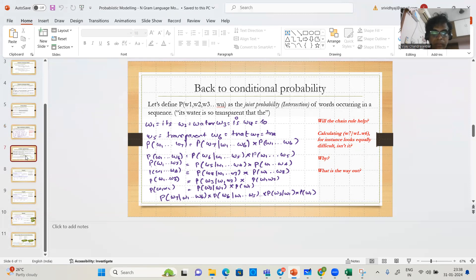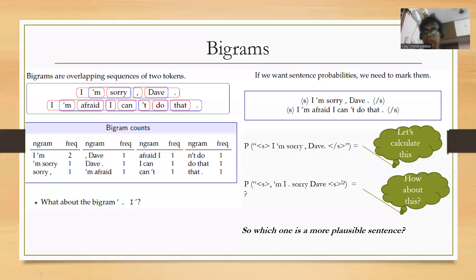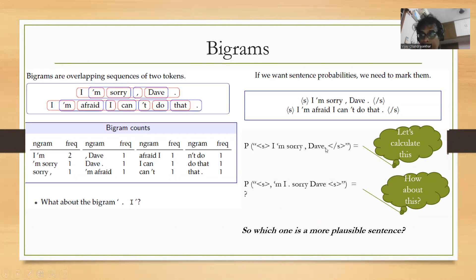So I'll have to figure out: P(I | ⟨s⟩) × P(am | I) × P(sorry | am) × P(comma | sorry) × P(Dave | comma) × P(period | Dave) × P(⟨/s⟩ | period). Let's take one example: P(I | ⟨s⟩). Expand this: P(⟨s⟩ I) / P(⟨s⟩).